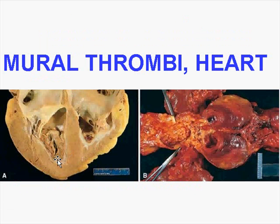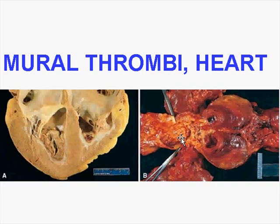Here is a mural thrombus adhering to a ventricle, and here is another adhering to the wall of the aorta. A systemic arterial blood clot occurring downstream is about three to four times more likely to originate from the heart than from the aorta — though anatomically those are the only two possible sources. We'll continue with slide 71 in the next chapter. Thank you.